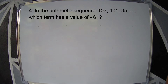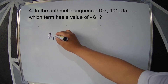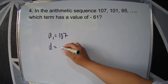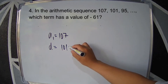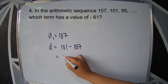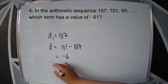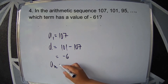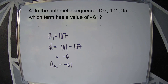Example 4: In the arithmetic sequence 107, 101, 95, and so on, which term has a value of negative 61? The first term is 107. The common difference is 101 minus 107, which is negative 6. The value negative 61 will serve as our a sub n, and n is the value we need to find.